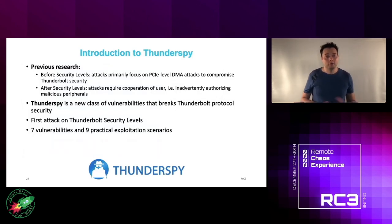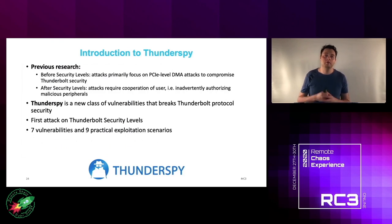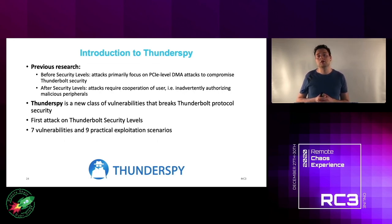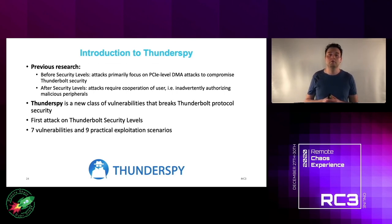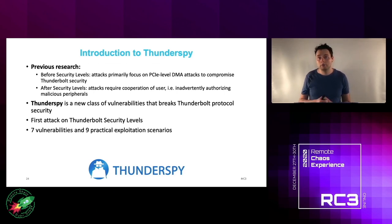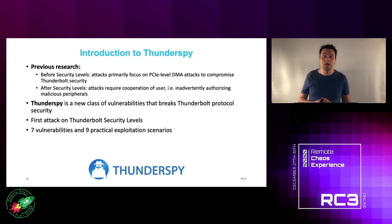Introducing ThunderSpy. Previous research before security levels mainly focused on PCIe-level DMA attacks to compromise Thunderbolt security. After the introduction of security levels, research mostly focused on tricking the user into authorizing malicious devices. ThunderSpy is a new class of vulnerabilities that really breaks Thunderbolt protocol security, being the first attack on Thunderbolt security levels. We're presenting seven vulnerabilities and nine practical scenarios to exploit them.